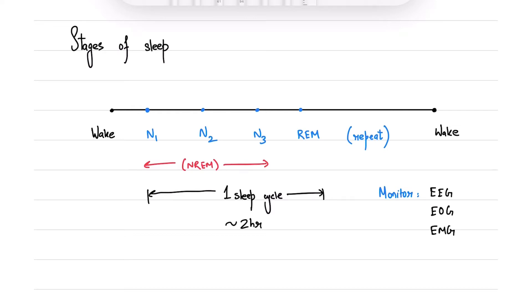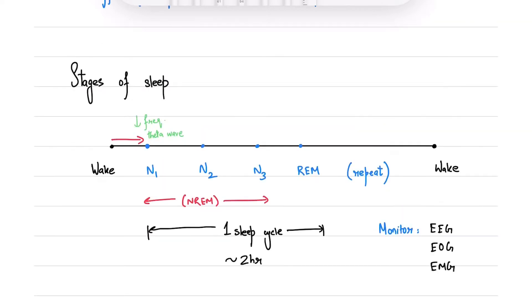Progression of sleep occurs as follows: a person in wake state will first enter N1, where the EEG will show low frequency theta waves. We'll be seeing all the images for all EEGs after discussing all the stages of sleep. Eye movements are slow and rolling. It's the lightest phase of sleep. N1 constitutes 5 to 10% of total sleep. If this is prolonged, the differential diagnosis includes obstructive sleep apnea.